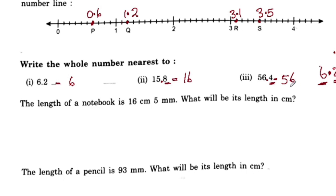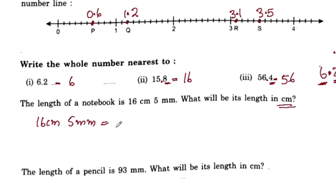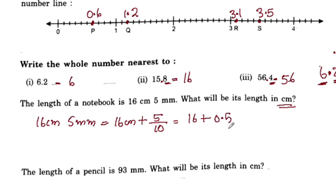The length of a notebook is 16 centimeters 5 millimeters. What will be its length in centimeters? We have 16 centimeters as the whole number. 5 millimeters: 5 divided by 10 is 0.5. So 16 plus 0.5 gives us 16.5 centimeters.